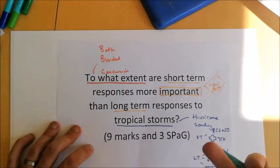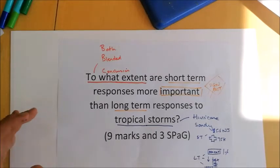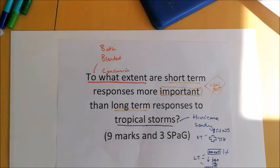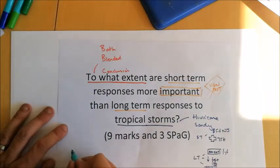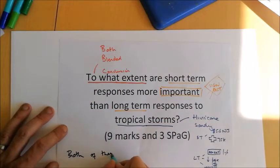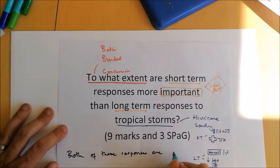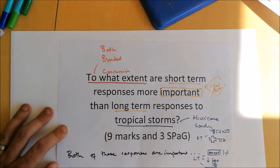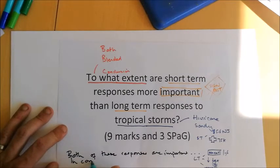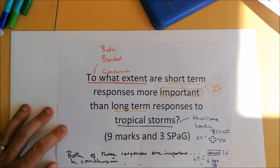Knowing we need to consider both sides of the argument, we should think about sentence starters and phrases that signal this to the examiner. We might want to start with something like 'both of these responses are important,' which allows us to open up the argument. Then at the end we'll have 'in conclusion' followed by our opinion. I've now mocked up a model answer and we're going to read through it and look at the thinking behind how it's structured.